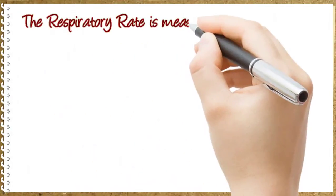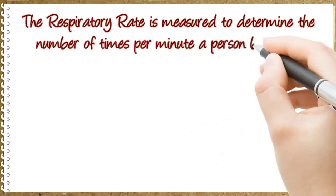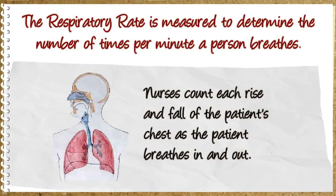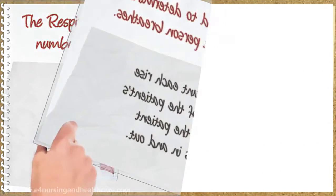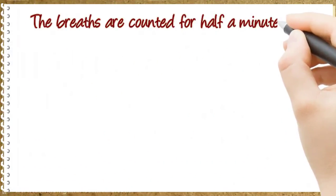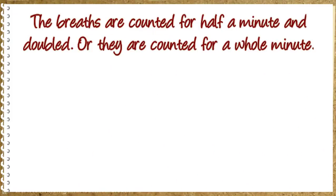The respiratory rate is measured to determine the number of times per minute a person breathes. Nurses count each rise and fall of the patient's chest as the patient breathes in and out. The breaths are counted for half a minute and doubled, or counted for a whole minute.